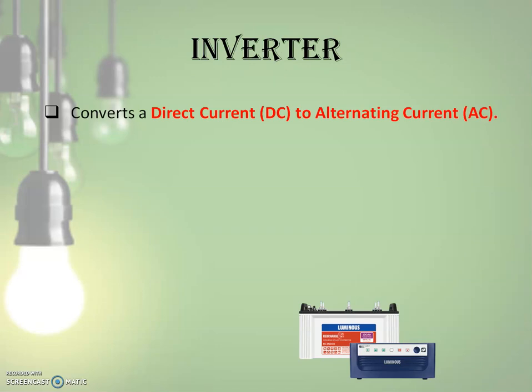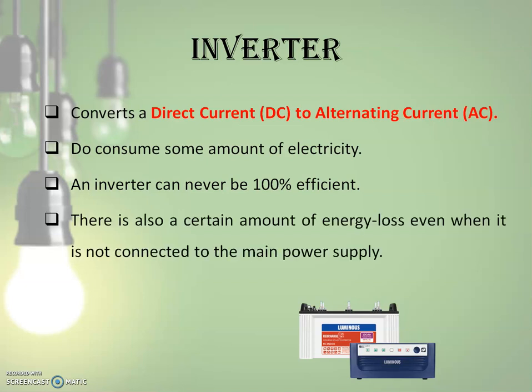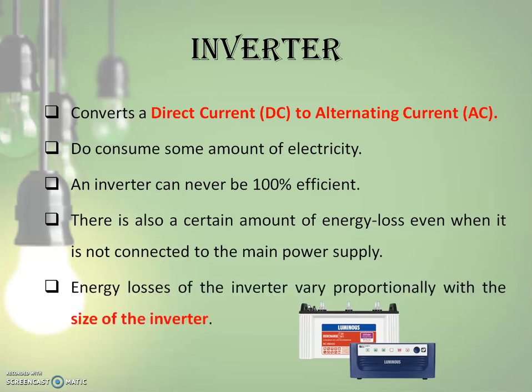We know that an inverter converts DC to AC. While inverters provide electricity backup to household appliances, they do consume some amount of electricity themselves. If a device converts all of the power it consumes to output, it is said to be 100% efficient. An inverter can never be 100% efficient — there is always a certain amount of loss associated with its functioning. The moment you switch on your inverter, in addition to powering the connected appliances, there is always some electricity loss. Energy losses also occur even when the inverter is not connected to the main power supply. Typically, energy losses vary proportionally with the size of the inverter — the bigger the inverter, the greater the energy losses.